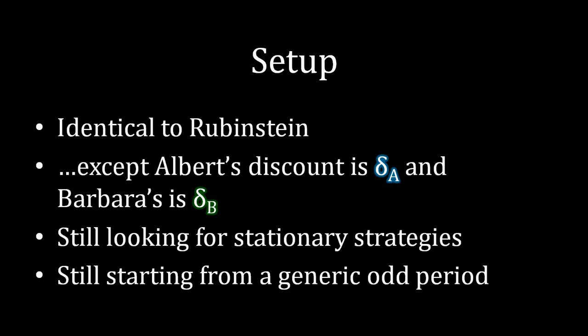Our setup here is going to be very similar to the standard Rubinstein bargaining game, with one minor modification. Previously the actors had identical discount factors. Now we're going to have Albert's discount factor be delta A, and Barbara's discount factor be delta B, and they don't need to be equal to each other. In most bargaining situations, two actors are not going to have identical discount factors.